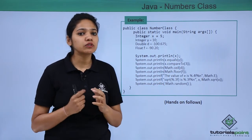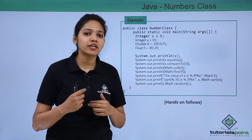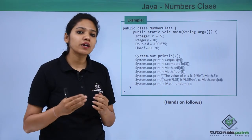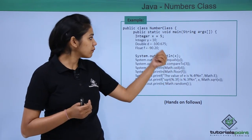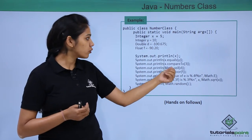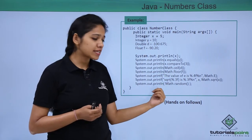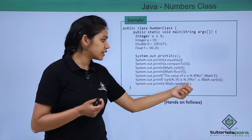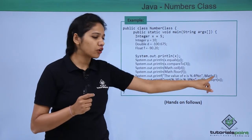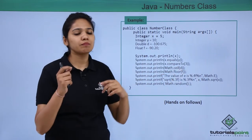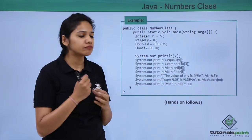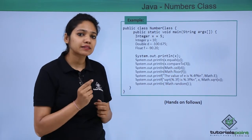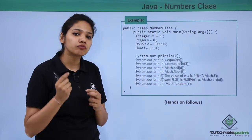Then we are checking if x is equal to y or not, and then comparing the x value with 3. Then if you want to perform certain mathematical functions like ceiling and floor - ceiling provides you the rounded-up value, that is the ceiling value for your double and floor value for your floor variable. Because all these are mathematical functions, we use the keyword Math - Math dot whatever method or function you want to perform.